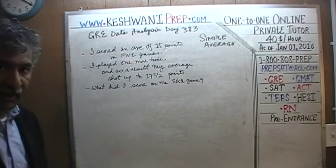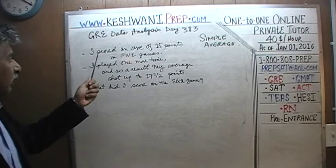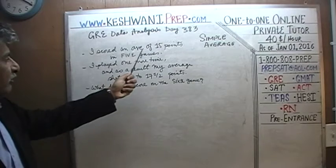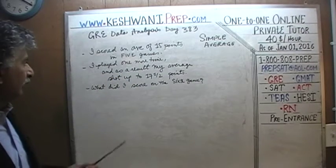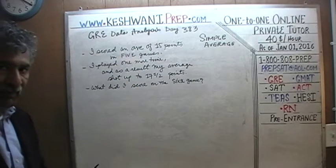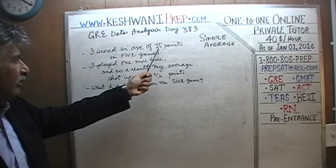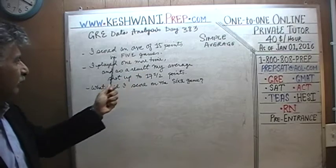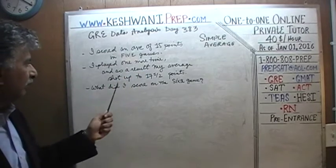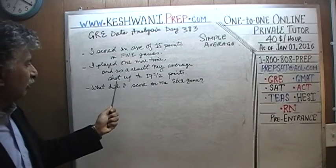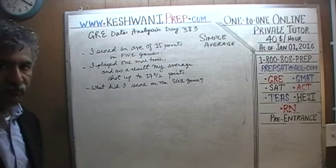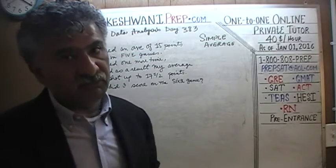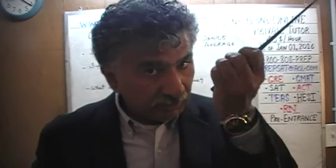We are told that I scored an average of 15 points in five games. I played one more game after those five, and as a result my average score shot up to 17 and a half points across all six games. The question is: what did I score in the sixth game? Obviously I must have done very well to raise my average from 15 to 17 and a half.